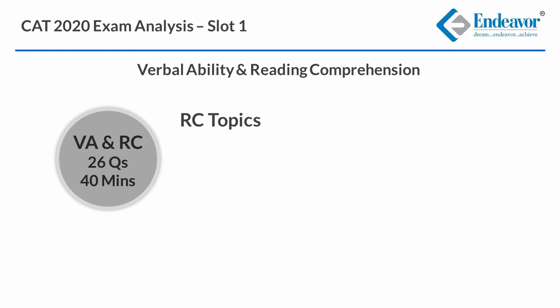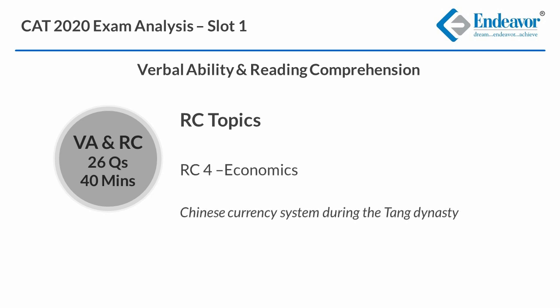The last passage was on economics. It talked about the Chinese currency system during the Tang dynasty. This carried 5 questions and could be termed an easy one.